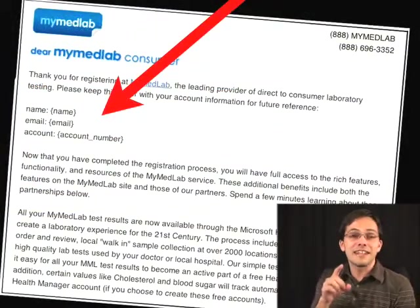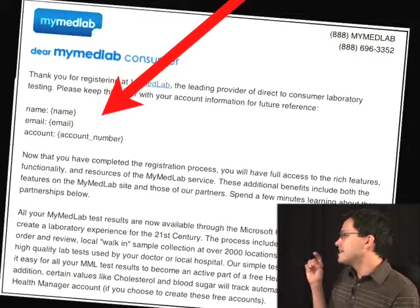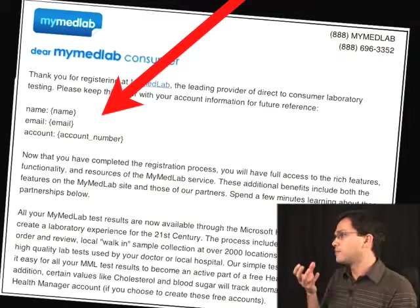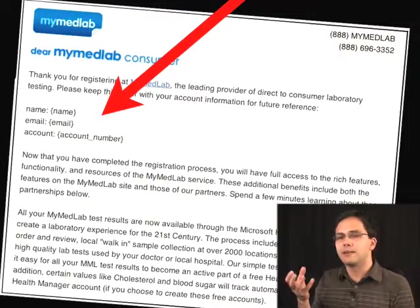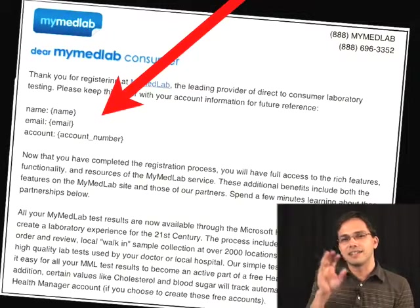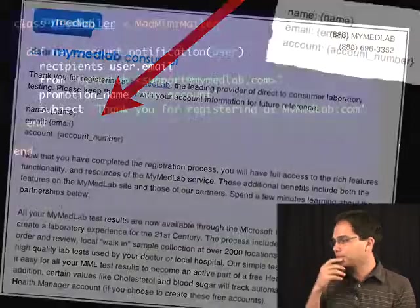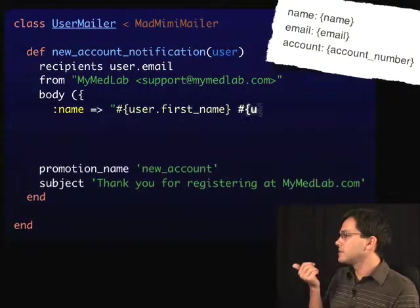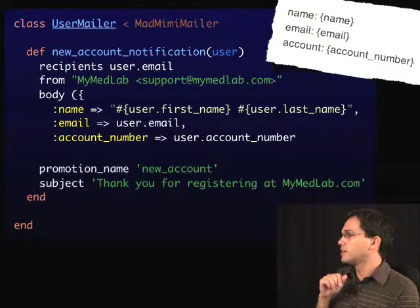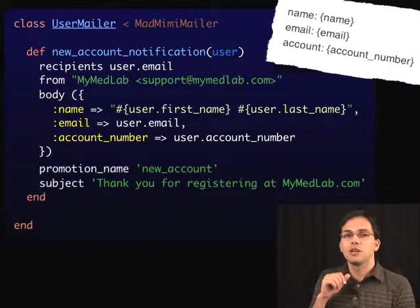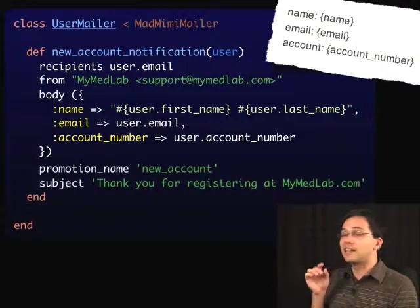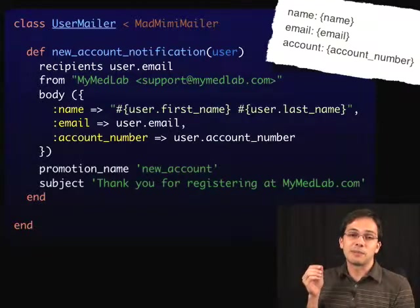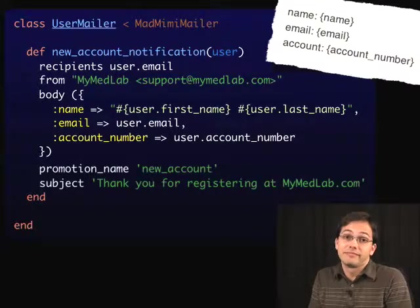But that leads us to the next problem. What if inside of my emails I've got dynamic data — if I want to put the user's name, email, and account number, how do I do that if I've got templates on someone else's server? We can do that by simply using the body keyword. Inside a hash, we put the data, which then gets sent to Mad Mimi and populated inside of that promotion, then sent to the user. It's just that easy.